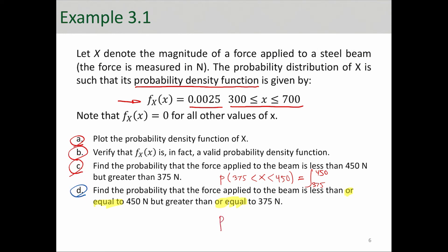So, the term 'or equal to' is the only difference between part D and part C. So, basically, this part of the problem is asking you for what is the probability of X being more than equal to 375 and less than or equal to 450.